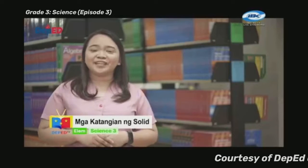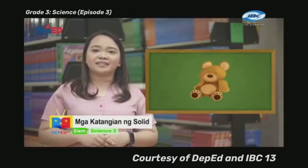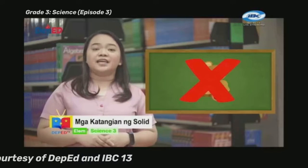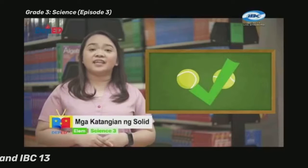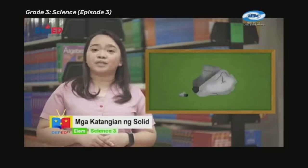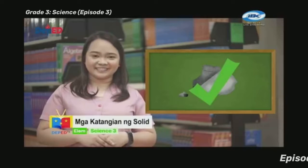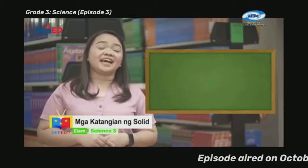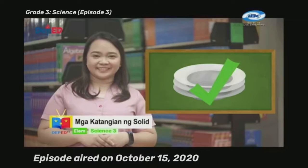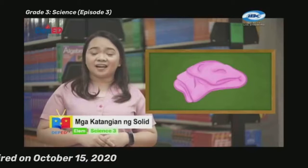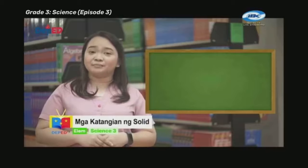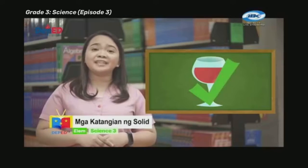Ngayon naman mga bata, sagutan natin ang inyong ginawa. Para sa unang bilang, teddy bear — ekis. Ito ay malambot. Ikalawang bilang, bola — check! Ito ay matigas. Ikatlong bilang, bato — check! Ito ay matigas. Ikaapat na bilang, plato — check! Ito ay matigas. Ikalimang bilang, tuwalya — ekis. Ito ay malambot. At ikaanim na bilang, baso — check! Ito ay matigas.